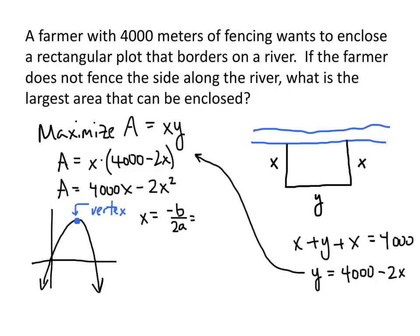In this case, b is 4,000, the coefficient of x. And a is negative 2, that's the coefficient of x squared. And negative 4,000 divided by negative 4 on the bottom there, that works out to be 1,000. So at x equals 1,000, that's where the vertex of this parabola lives.